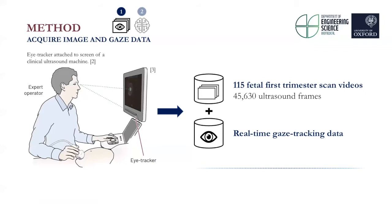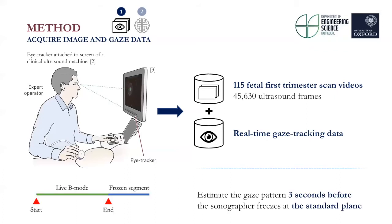For the study, we use 115 first trimester scan videos with corresponding real-time gaze tracking data. During a scan, sonographers search for a standard geometry plane, denoted as live B-mode on the diagram. Next, they freeze the image, take measurements, and save the best acquisition. In the proposed research, we estimate the gaze pattern three seconds before the sonographer freezes at the standard plane.